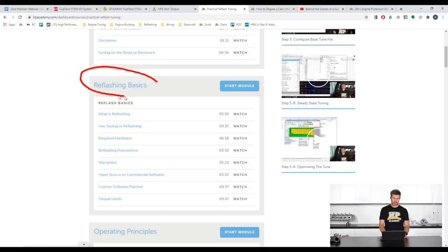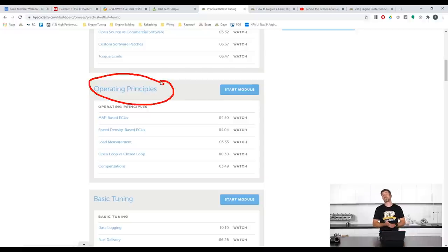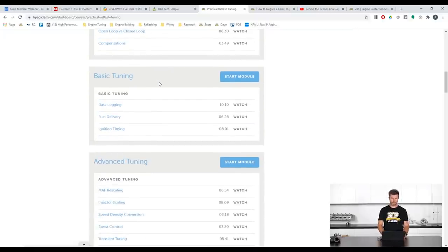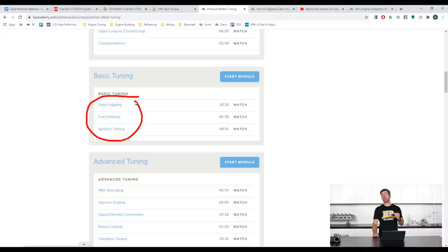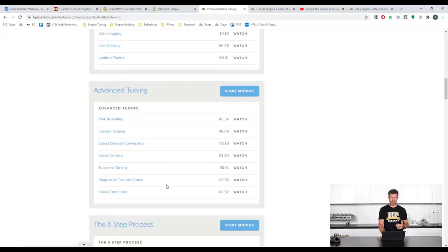So this is applicable for any reflashing package regardless whether you're using commercial software such as HP Tuners or EFI Live, Ecutech, Cobb, doesn't really matter. Or open source freely available software such as ROM Raider or maybe ECU Flash. We cover the basics of reflashing here. So what you actually need to know about reflashing and how it varies from tuning in aftermarket standalone. We'll also cover the operating principles of a factory ECU and these can vary quite dramatically again from an aftermarket standalone. Really important to understand what you're actually trying to achieve. We'll also cover some of the basics such as data logging which you're going to be relying on when you're reflashing because in most instances you won't be able to make live tuning changes in real time. We'll also cover how to change your fuel delivery and your ignition timing.